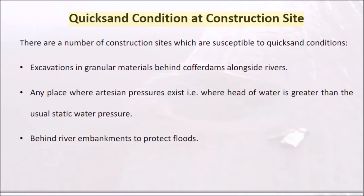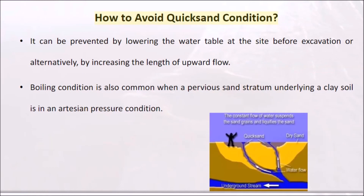There are a number of construction sites susceptible to quicksand conditions: excavations in granular materials behind cofferdams alongside rivers; any place where artesian pressures exist, i.e., where the head of water is greater than the usual static water pressure; and behind river embankments built to protect against floods. Quicksand can be prevented by lowering the water table at the site before excavation or by increasing the length of upward flow. Boiling condition is also common when a pervious sand stratum underlying a clay soil is under artesian pressure.